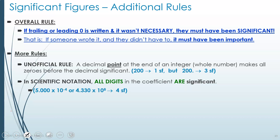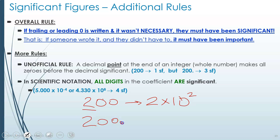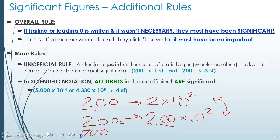When converting a number like 200 to scientific notation, since only one digit is significant, you write 2 × 10². But if 200 has a decimal point — meaning all three digits are significant — you must show the zeros in scientific notation as 2.00 × 10². Scientific notation allows you to express any number of sig figs precisely. For example, 2.0 × 10² has two sig figs, showing you trust the first zero but not the second — something impossible to express in decimal form.